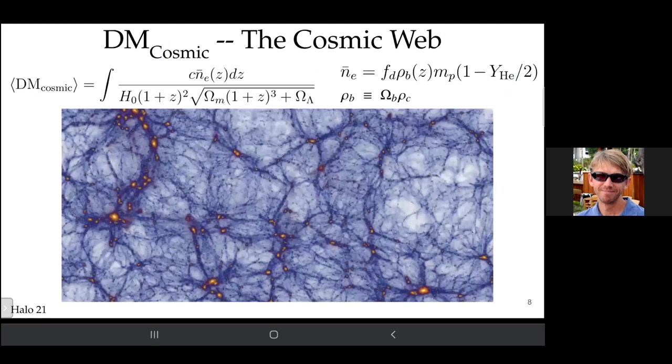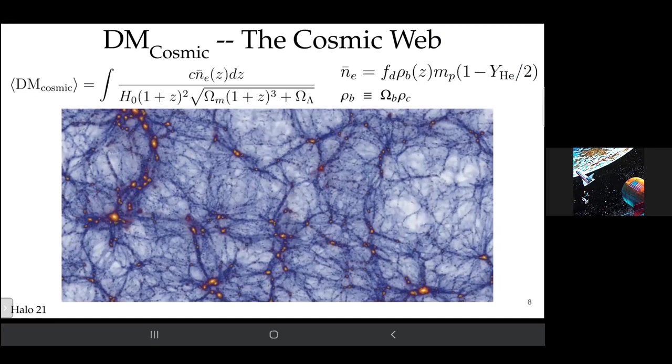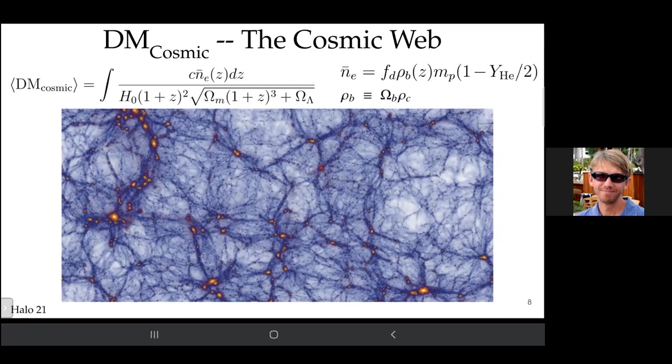The cosmic web contributes as well. This is what I'd say sucked me into this field. The integral here gives the average contribution based on the average density of the universe and cosmology. It does include a factor of Hubble's parameter H_0 and the baryon density, which we've known and measured well for a couple decades now, and the fraction of gas that's in baryons that are in a diffuse ionized state, which is the majority but not all.